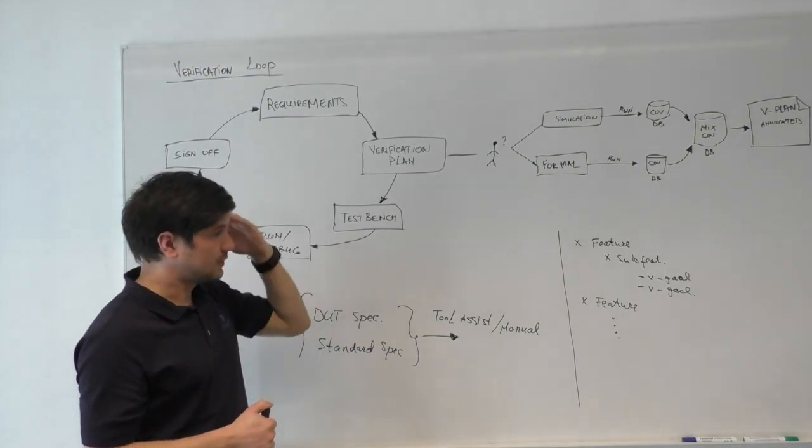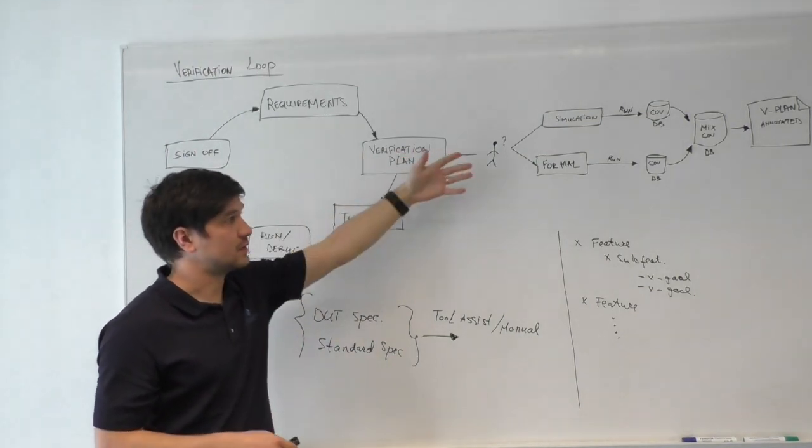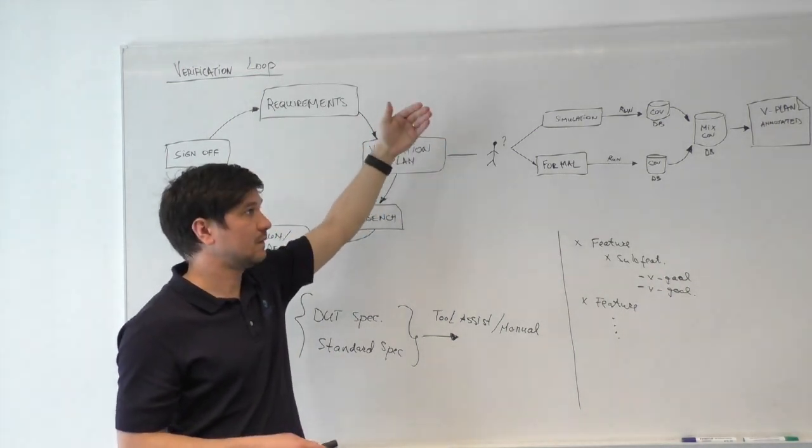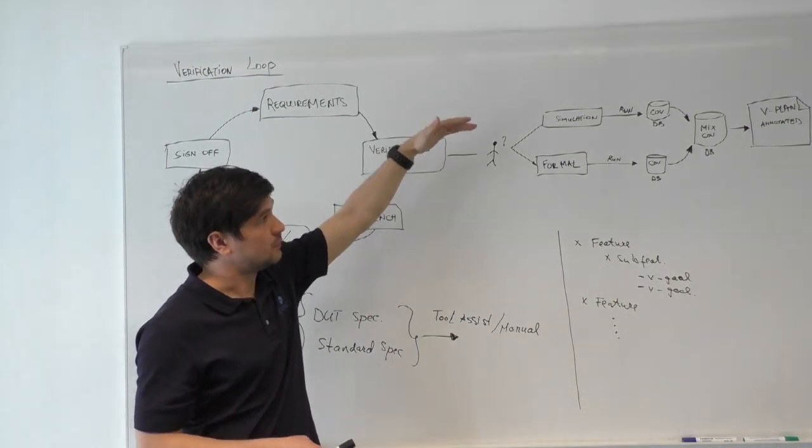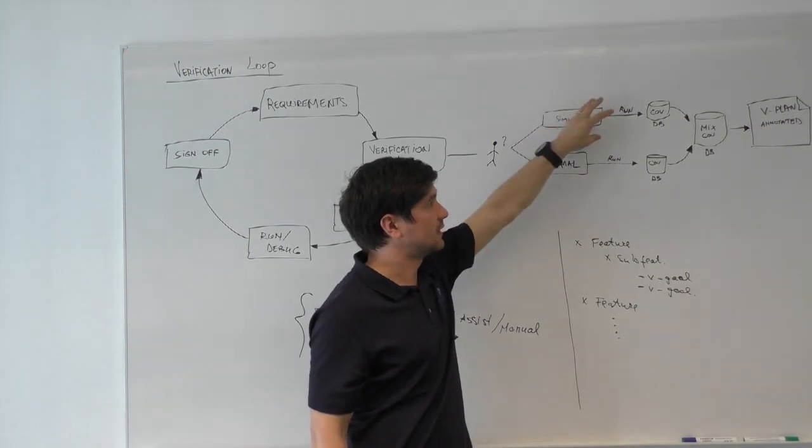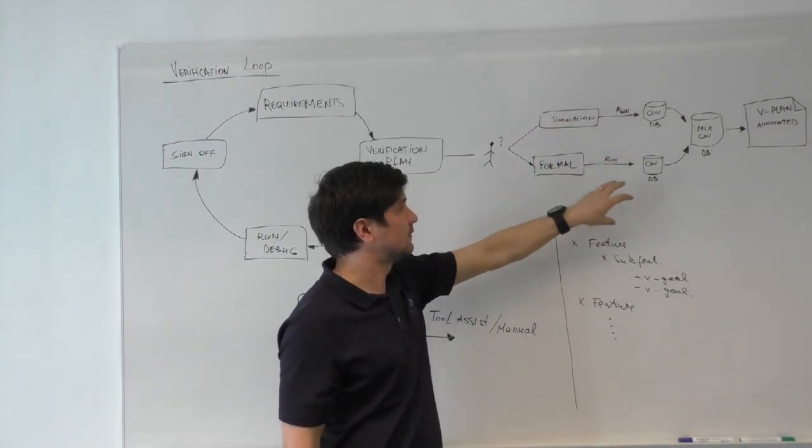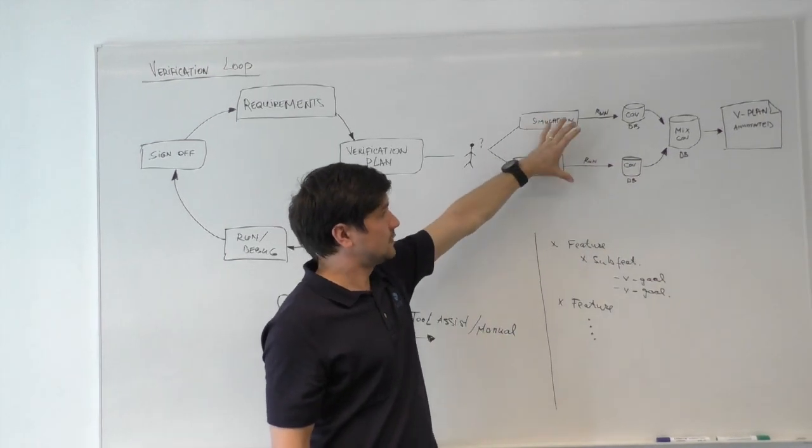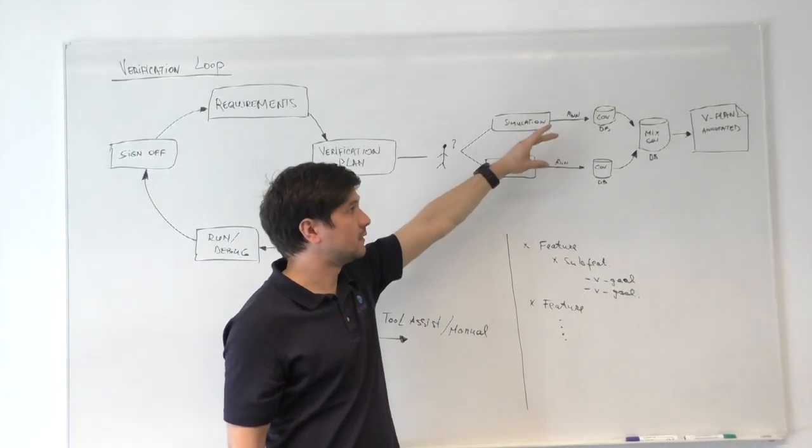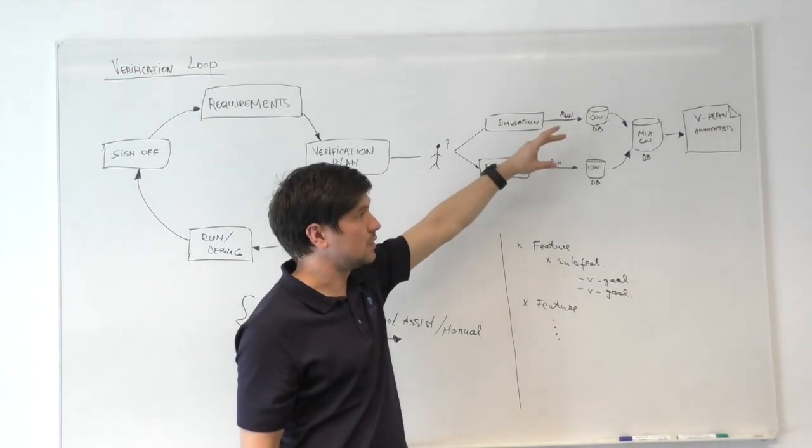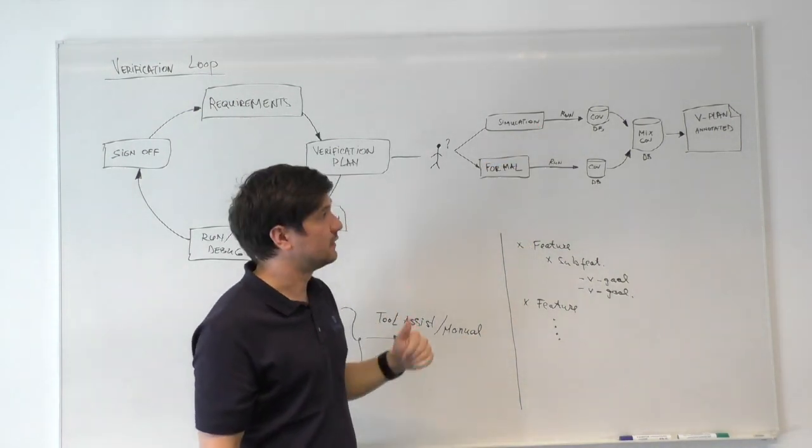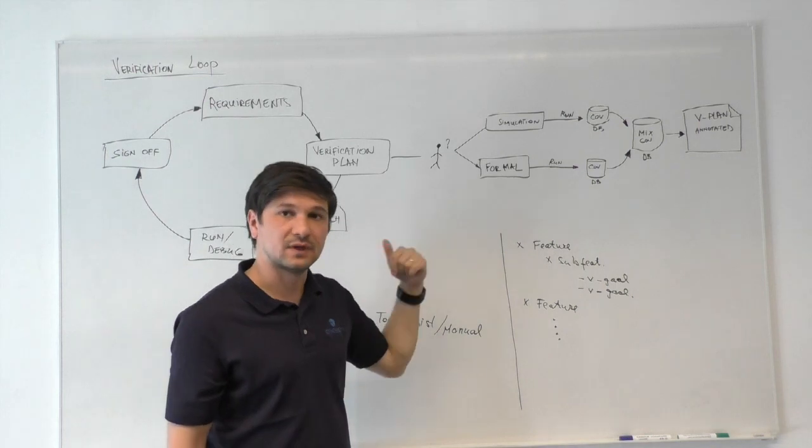Once the verification engineer decides what part goes to simulation and what part goes to formal, test benches are developed by engineers. They run for both simulation and formal, resulting in coverage databases collected from the simulation runs and coverage databases collected from the formal runs. These two databases are merged into a mixed one that can later be used to annotate the bullets in the verification plan you have in place, resulting in an annotated verification plan that can go to sign off.